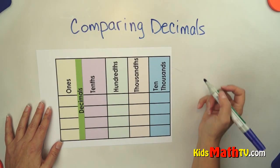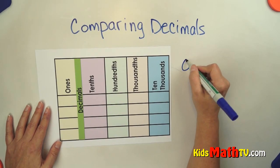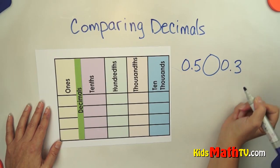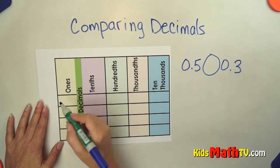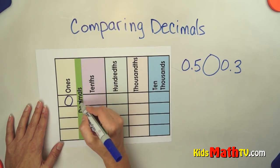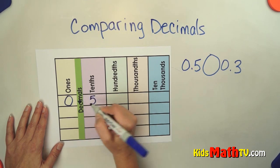If we have the decimals 0.5 compared to 0.3, I'm going to put that on my decimal chart. We have 0 ones, a decimal point, and 5 tenths.